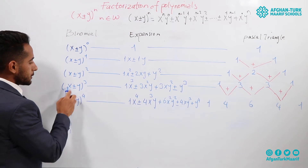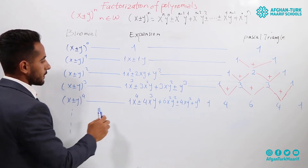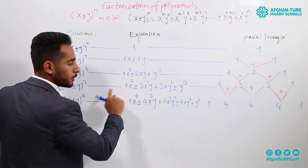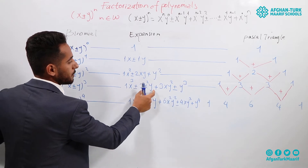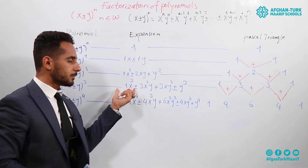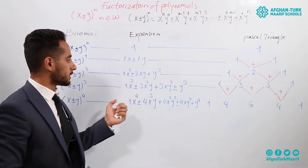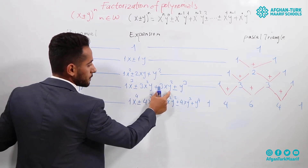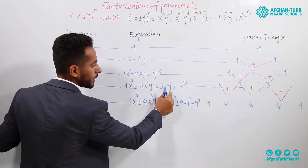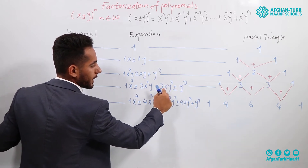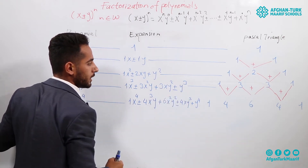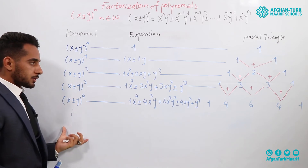The third identity: x plus or minus y to the power of 3. At the first term, x is x to the power of 3. The second term, x will be 1 less power — x to the power of 2 — and y to the power of 1, because at the first term we had y to the power of 0 which we didn't write. The third term: x to the power of 1 and y to the power of 2. At the last term, x to the power of 0 — which equals 1, so we don't write it — and y to the power of 3.